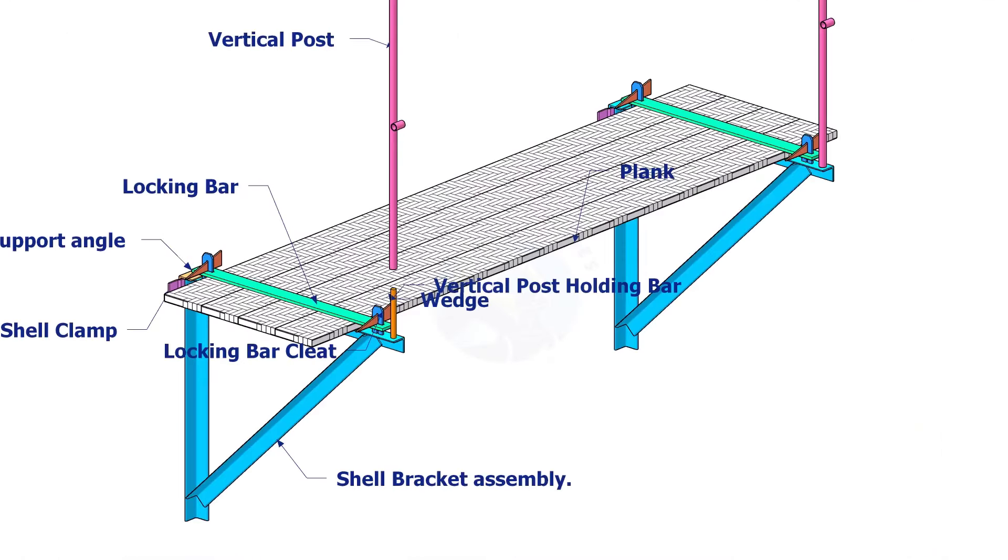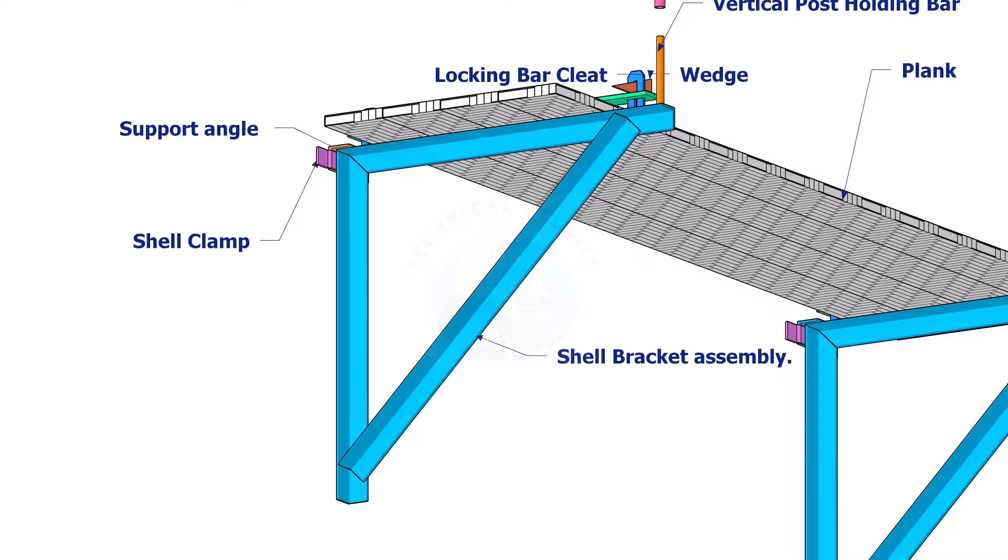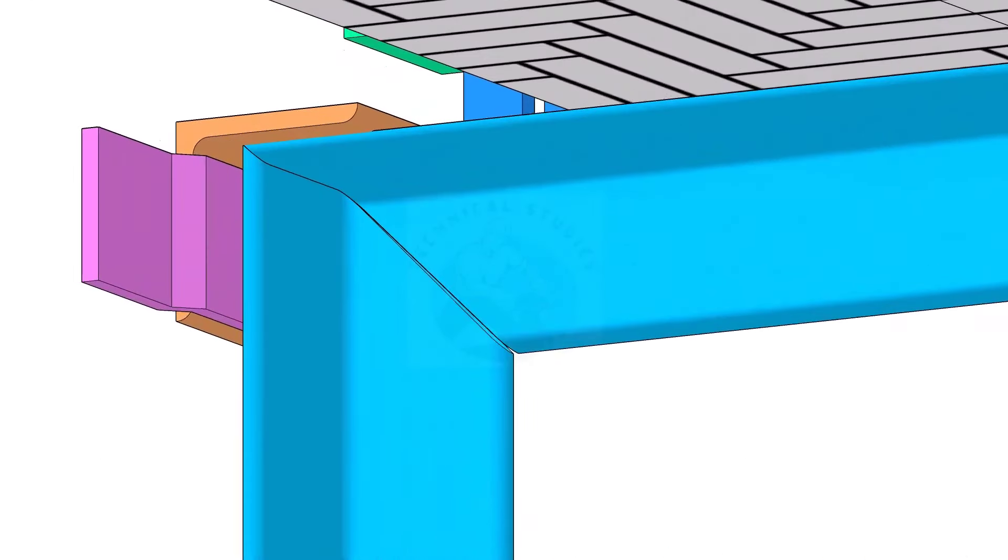Let us check the parts and its functions. Shell Bracket Assembly is the body of the bracket. The part size is given in the drawing. The members of this item shall be fully welded to each other.